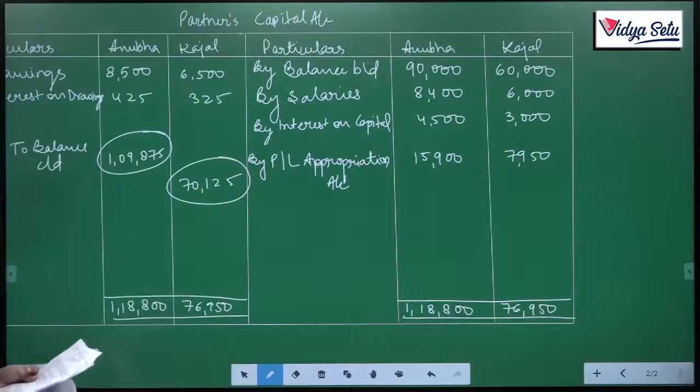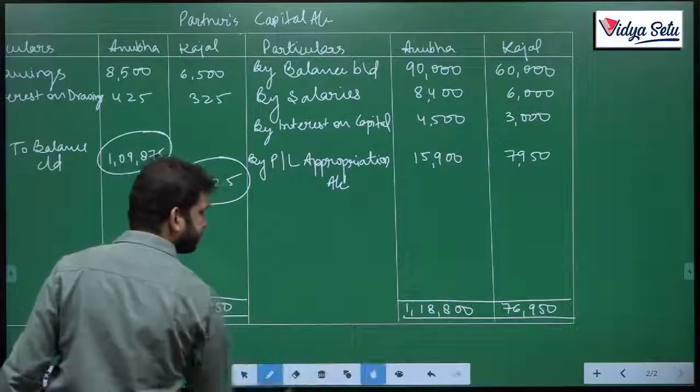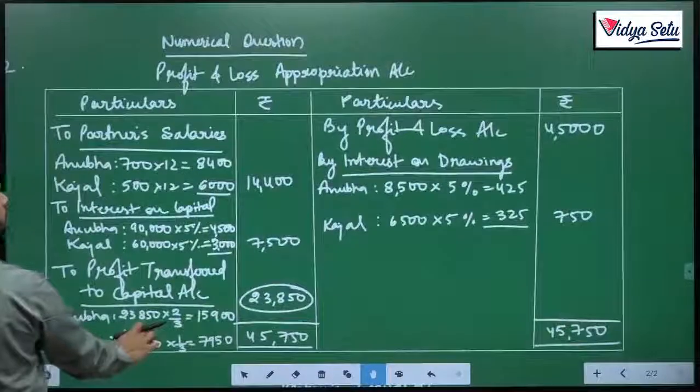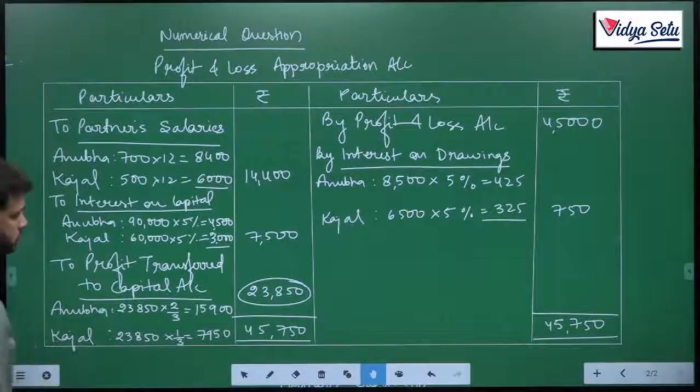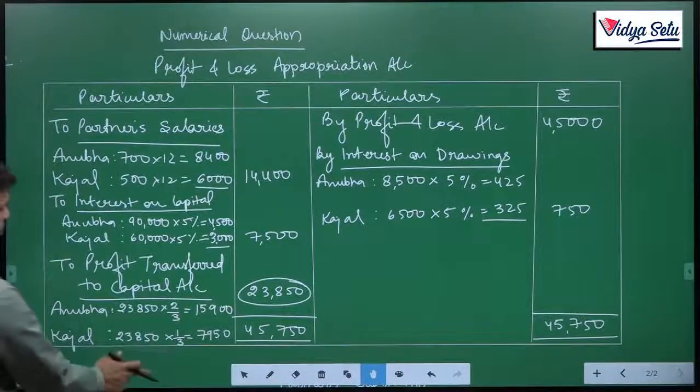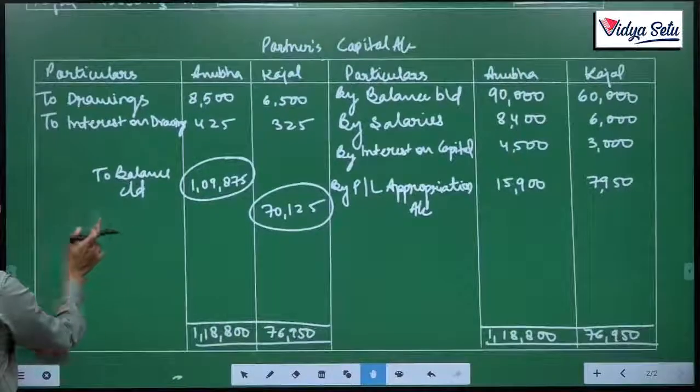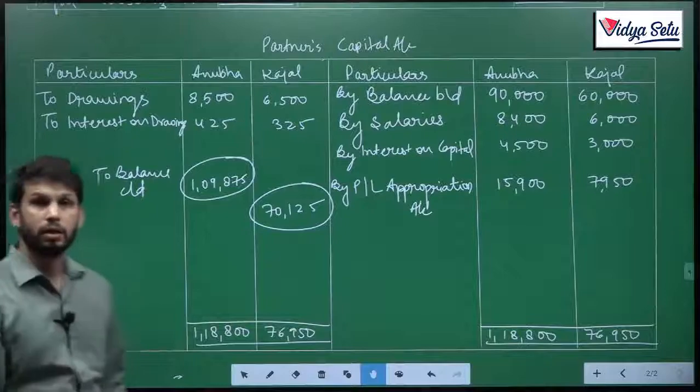Now, this is our solution for question number 2. Let us look at it, this is our P&L appropriation account and this is our partner's capital. Thank you.